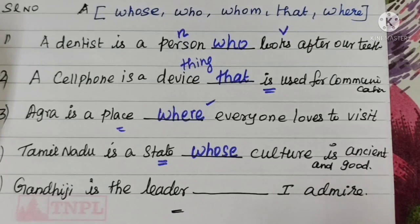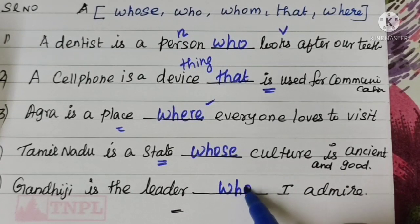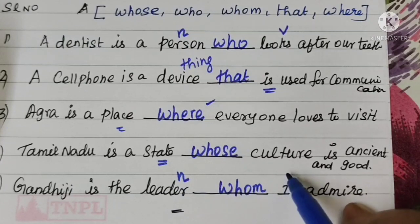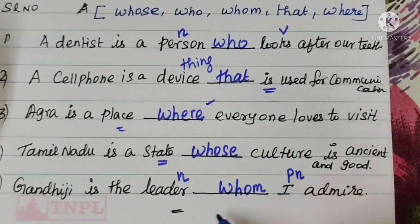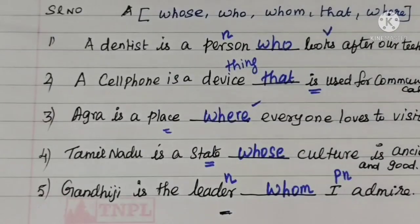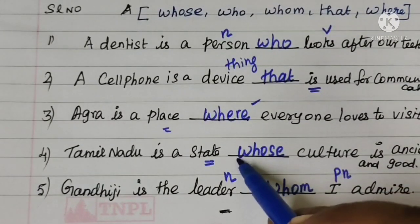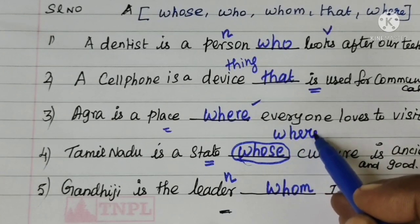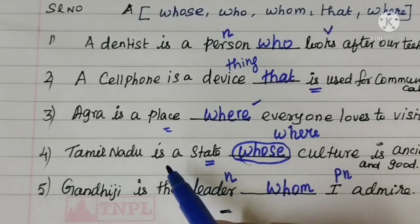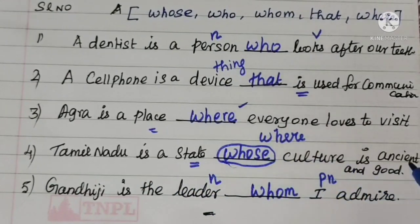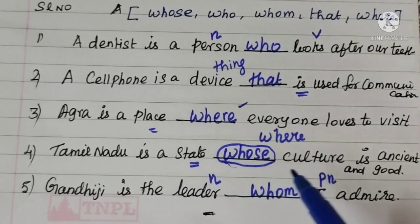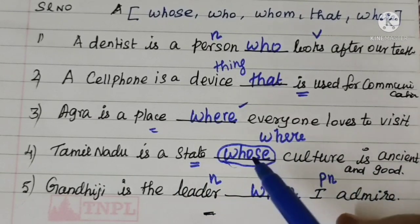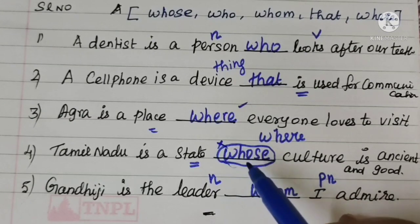Tamil Nadu is a state. Gandhi is the leader whom I admire. Here 'whom' is used because the answer to 'who do I admire?' is 'him', an object pronoun. So 'whom' is correct here. Who is used for one person as subject. Thank you.